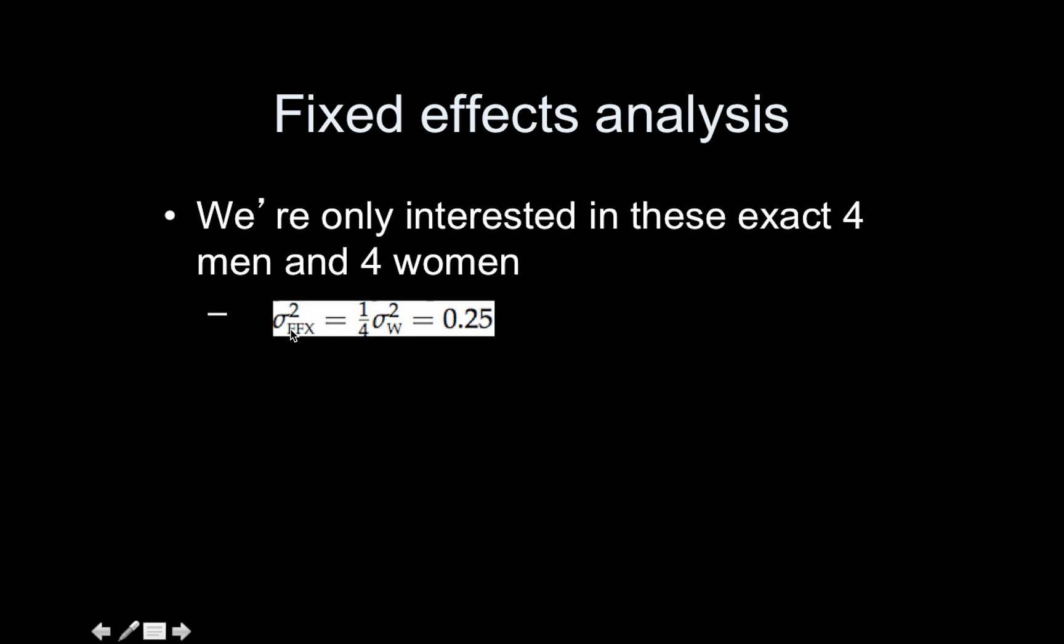In this case, our overall variance of the average hair length within gender group is going to be one fourth sigma squared within. So this is the fixed effects variance. This is the variance for the within gender distribution. Since we averaged four values, this is one fourth. The within-subject variance is one fourth of one for 0.25. So that makes sense. Within subject variance one, if you have four subjects and average, it goes down.